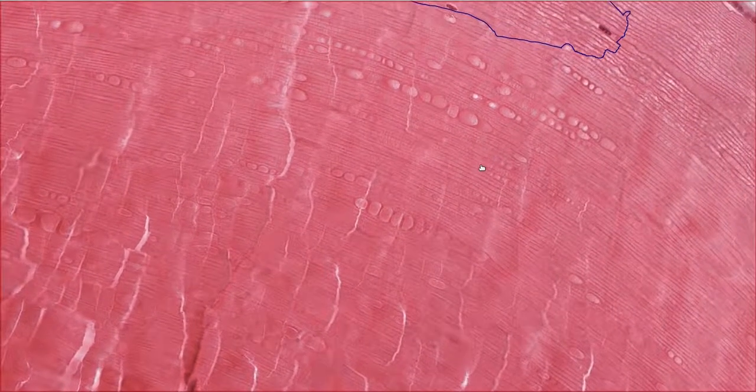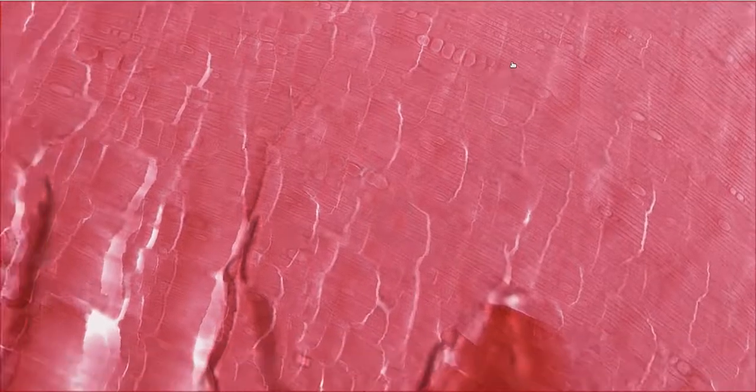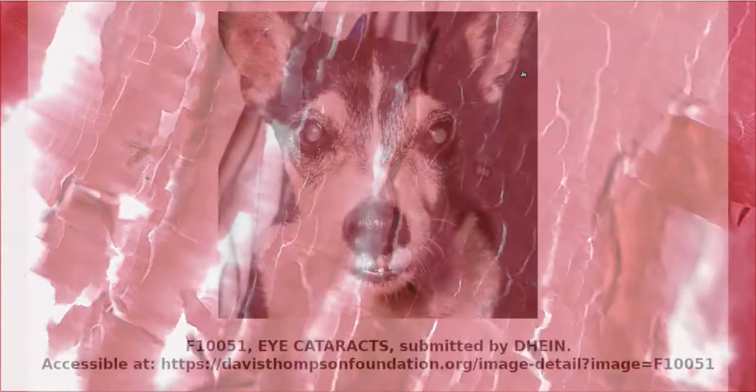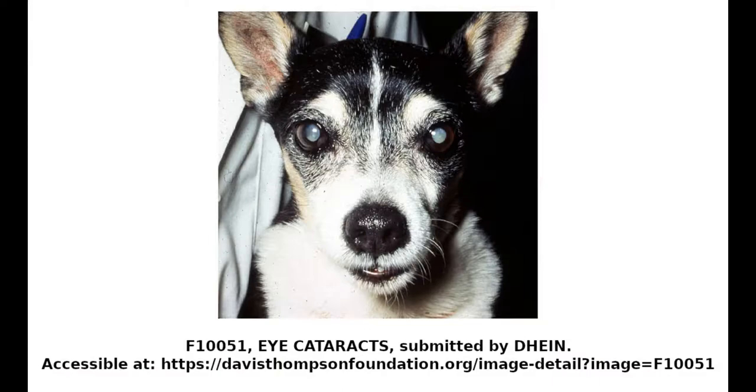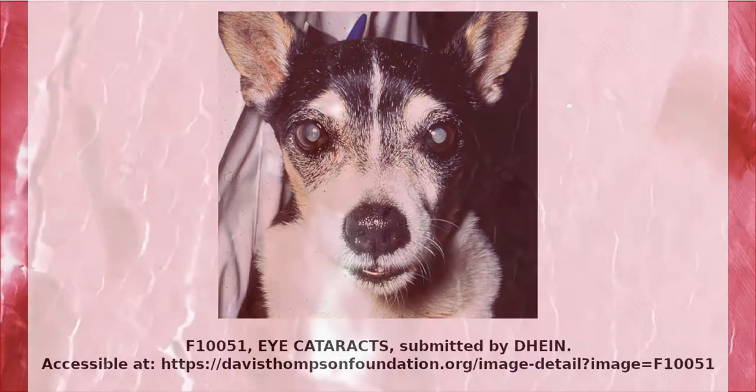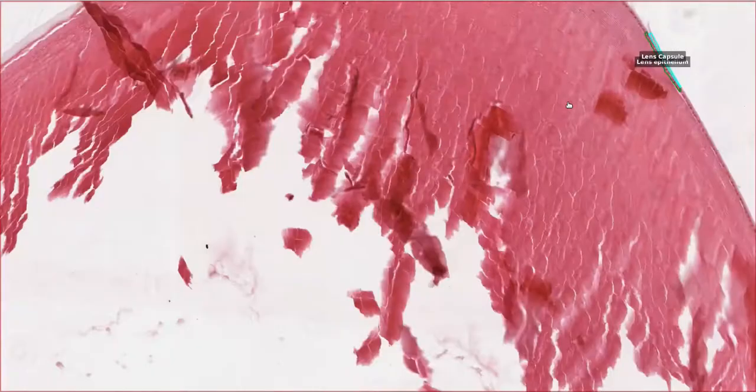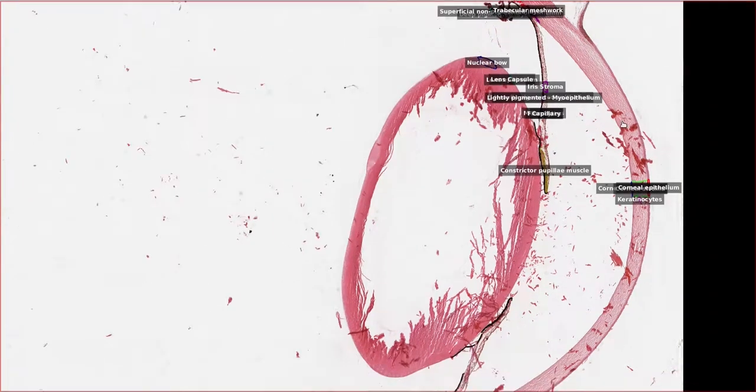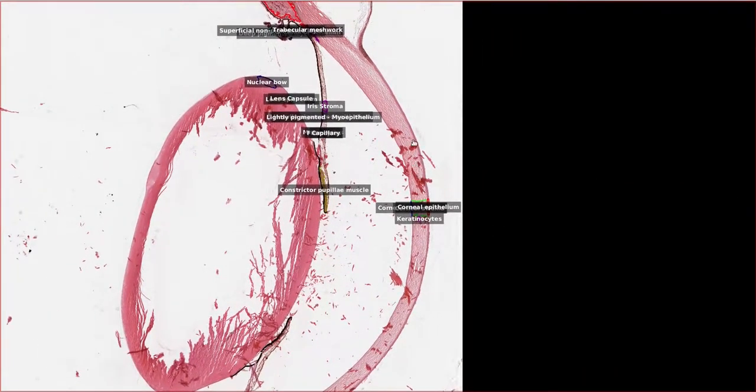Lens fibers condense over time to form the lens nucleus in the middle. Since lens fibers are made continually, they can accumulate in old age, forming opacities which can interfere with vision. The lens is made of hard material, so often shatters when it's cut for histology, as you can see has happened. In this case, it's kind of gone all over the place with some bits of lens fibers ending up over the cornea.